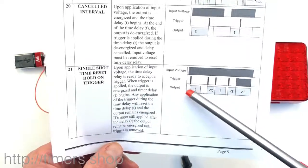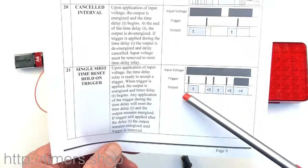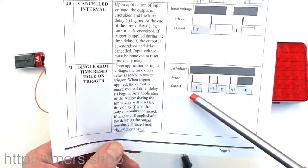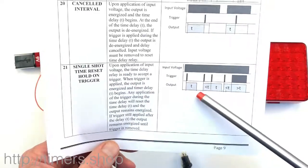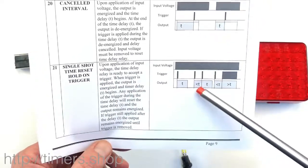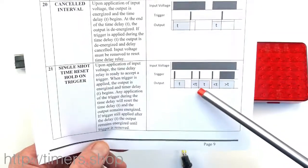Basically, if you push the trigger once or activate the trigger once, the output stays on for a period of time. If during that on time you activate the trigger one more time, it resets the time.